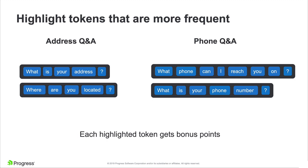The next step is to highlight the tokens that are in common within each Q&A. If you look on the left, the two tokens we have in common are the question mark. If you look on the right, we have more tokens in common — we have 'what', 'phone', and a question mark on both of those expressions.